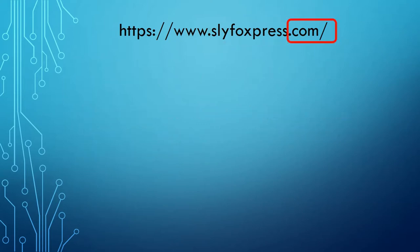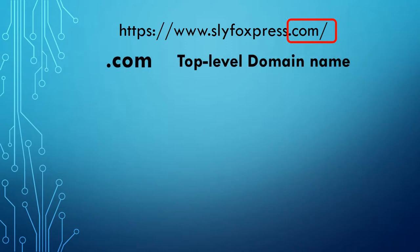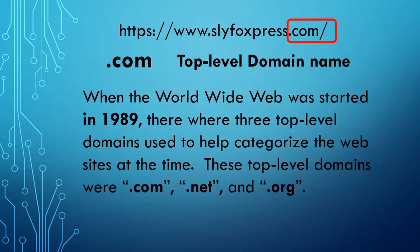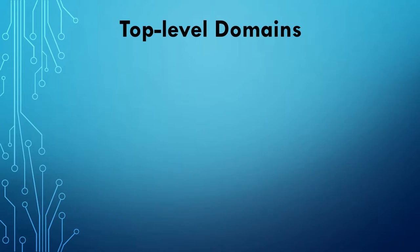Now finally, let's look at the dot com — the top-level domain name. When the World Wide Web was started in 1989, there were three top-level domains used to help categorize websites. Those top-level domains were dot com, dot net, and dot org.